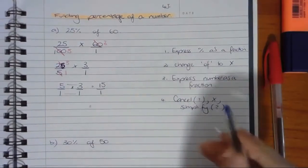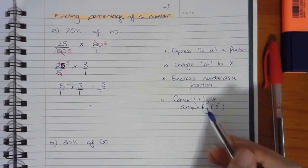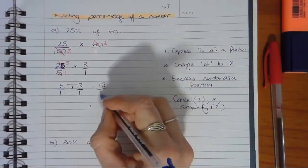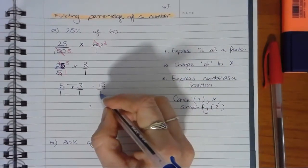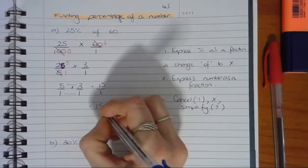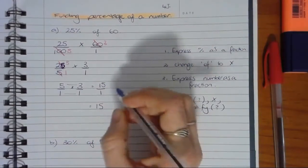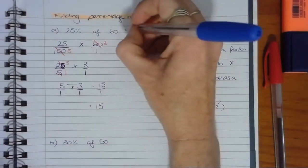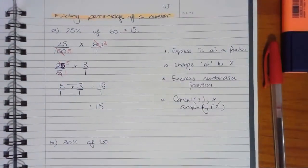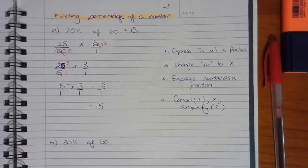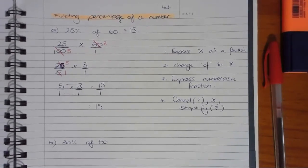And simplify is my last step. Really easy to simplify this, because we're just expressing it as a whole number. Whenever it's over 1, it's just the same as what's on top. So 15 is our answer. 25% of 60 equals 15. Let's do another example.